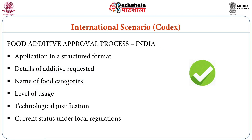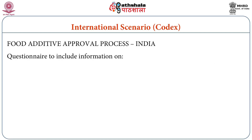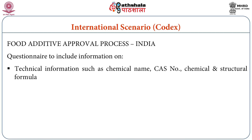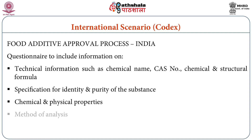As far as the Indian scenario is concerned, according to the FSSAI Act and regulations, the food additive approval process in India involves an application in a structured format covering: detail of the additive requested, name of food categories, level of usage, technological justification, current status under local regulations, JECFA and other safety evaluations, Codex approval status, and approval by other regulatory authorities. The questionnaire includes technological information such as chemical name, CAS number, chemical and structural formula, specifications for identification and purity of the substance, chemical and physical properties, and method of analysis.